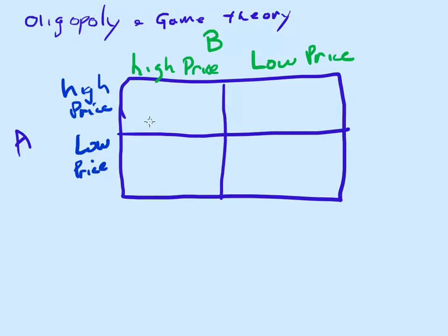Let's say they both have a high price. Well, let's say they both earn 10 million dollars, so A earns 10 million and 10 million for B. If they both have a low price, let's assume both of them have 3 million dollars - 3 million for A and 3 million for B.